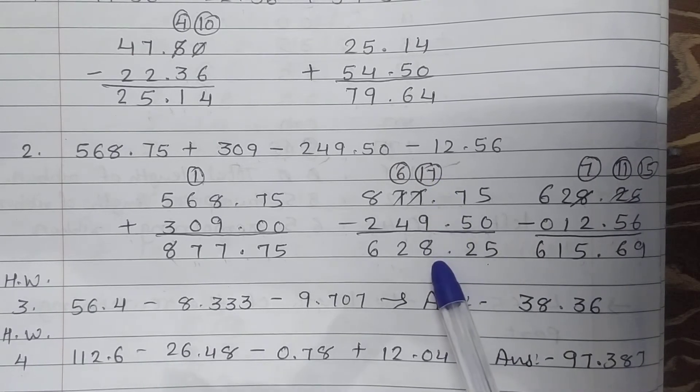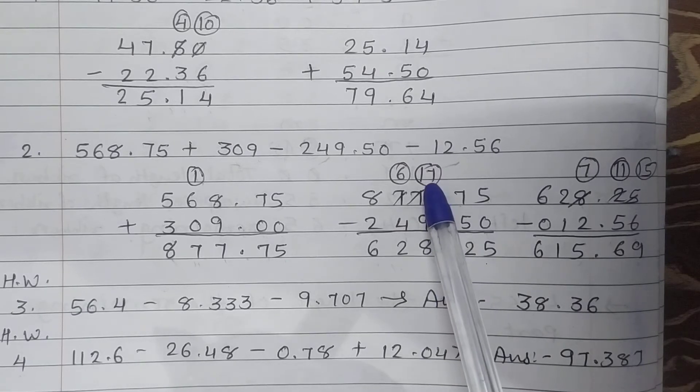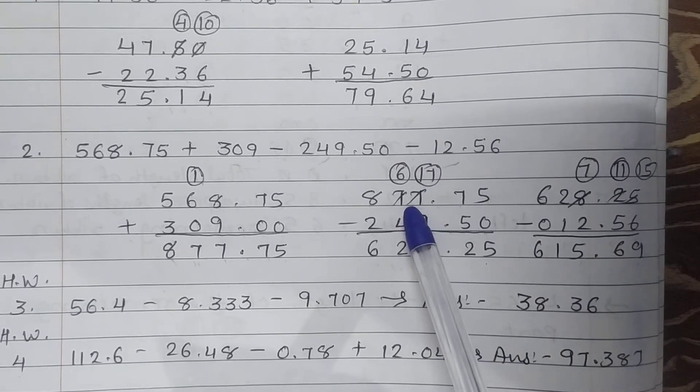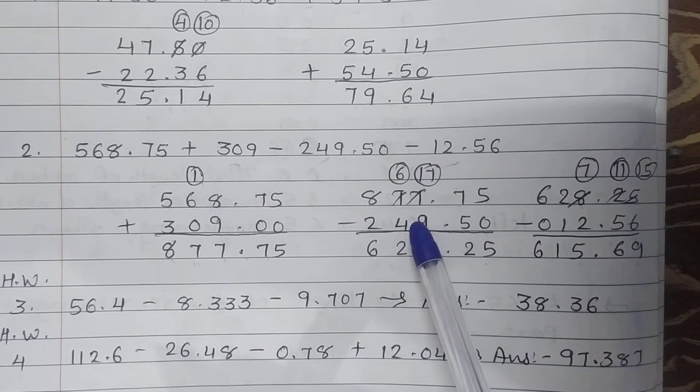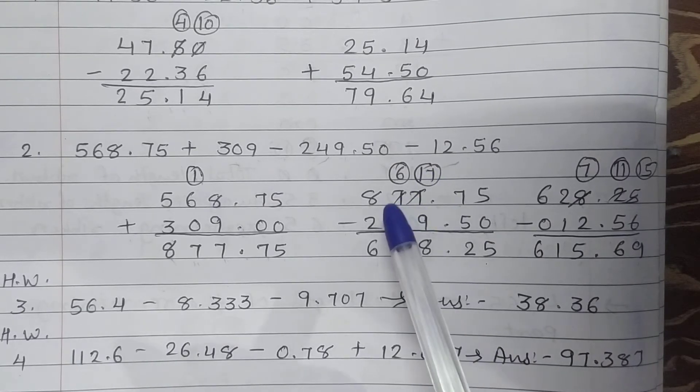17 minus 9 is 8. After taking 10 borrow, cut the number 7, less than 7 is 6. 6 minus 4 is 2, and 8 minus 2 is 6.